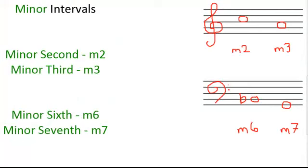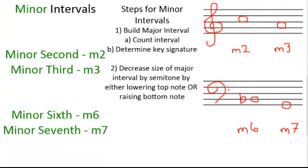Let's try building some ascending minor intervals. Our steps for building minor intervals: the first step is to build the major interval. That's why it's very important to know about building major intervals. The first step of building the major interval is to count the interval. From the C, we will count up, and we'll go from a C up to the D. So we'll write in that D, and we'll have our first step to building our major second.